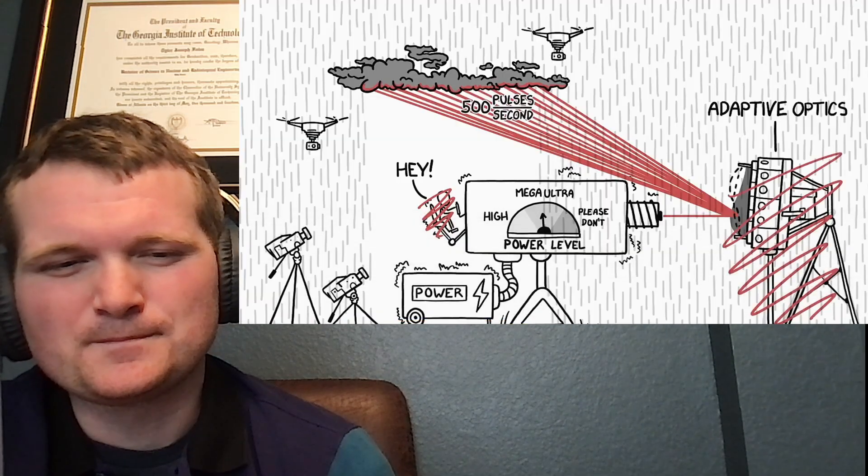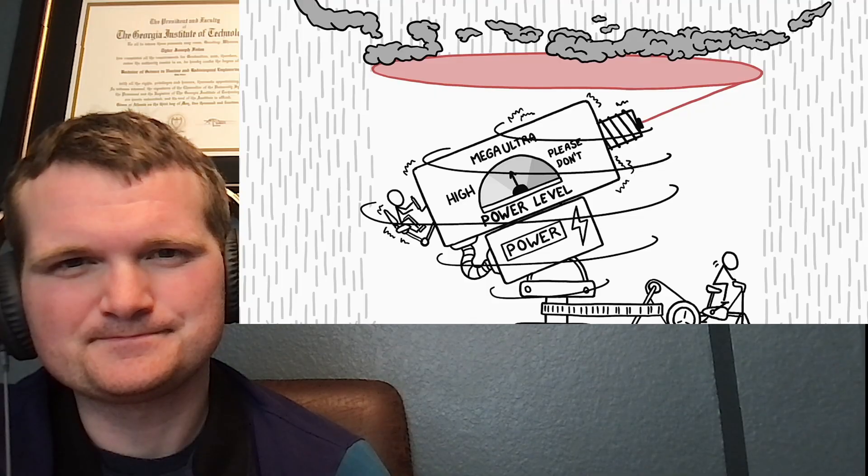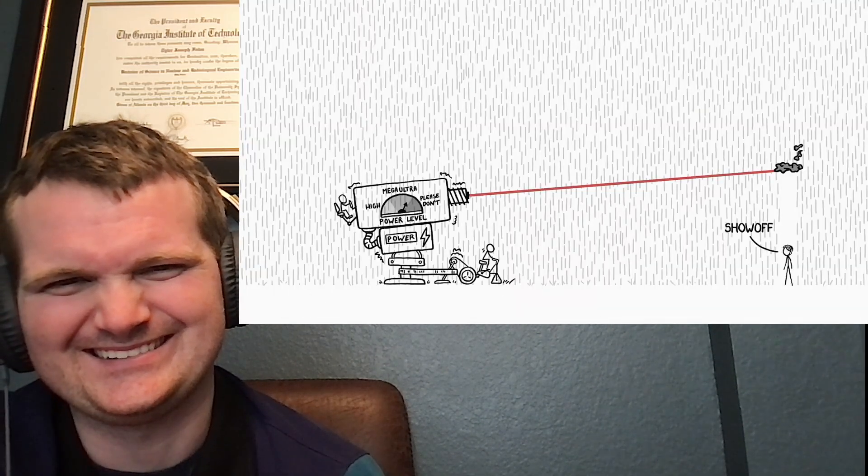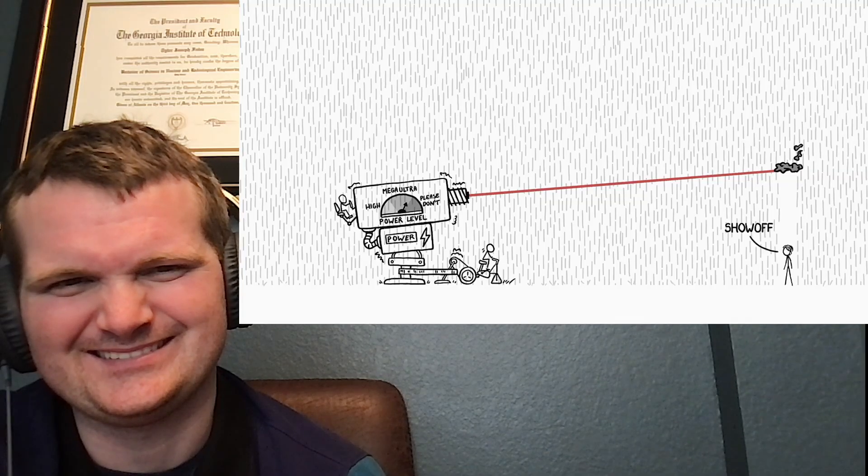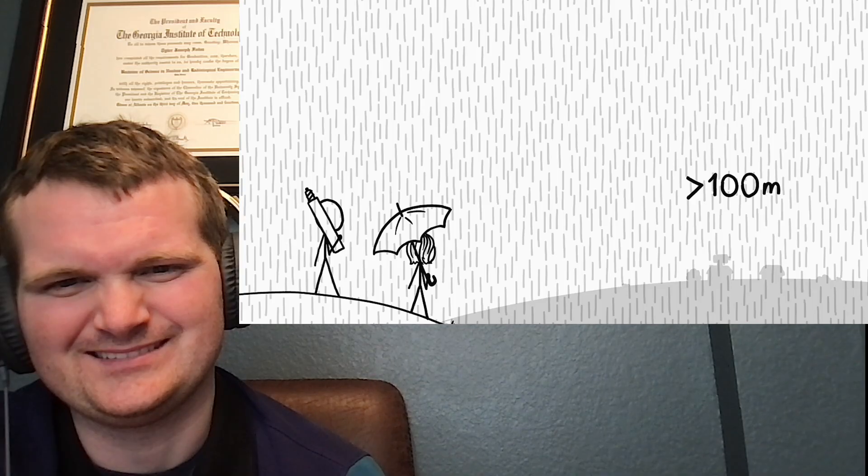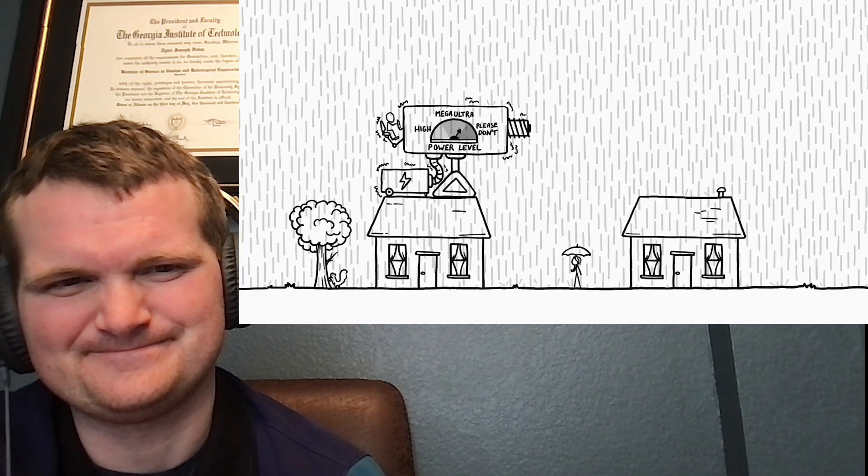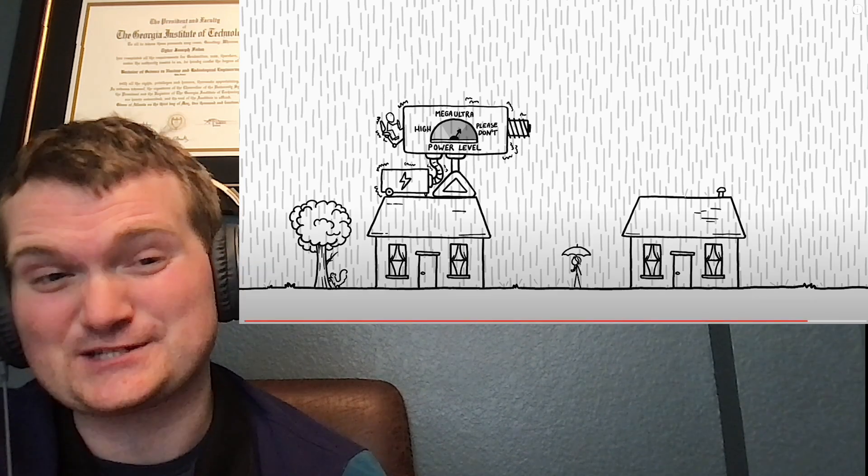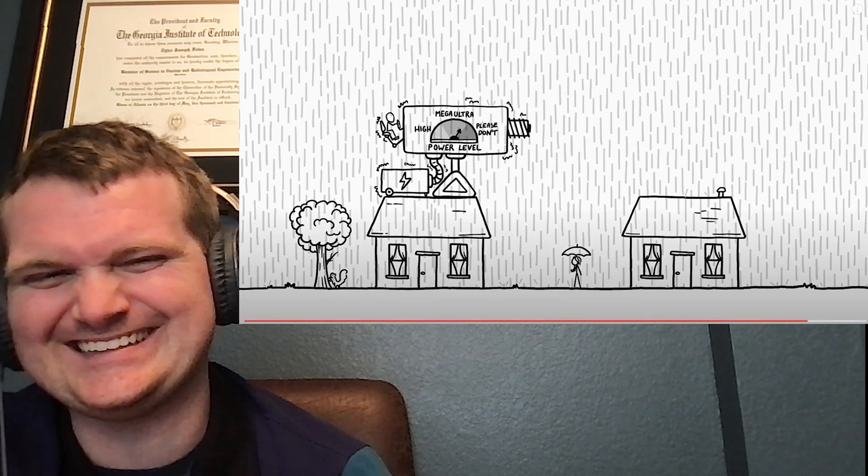It might seem easier to forget about targeting completely and just fire lasers in random directions. If you aim a laser beam in a random direction, how far will it go before it hits a drop? This is a pretty easy question to answer. It's the same as asking how far you can see in the rain, and the answer is at least several hundred meters. So unless you're trying to protect your whole neighborhood, firing powerful lasers in random directions probably won't help. Trying to protect your neighborhood, yeah you might hit people.